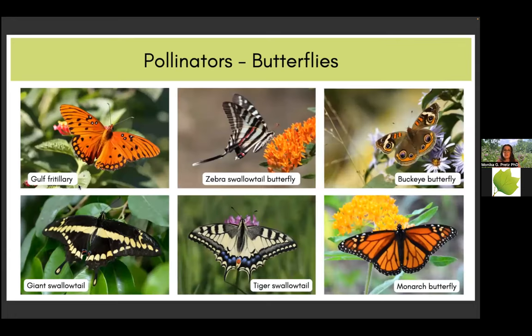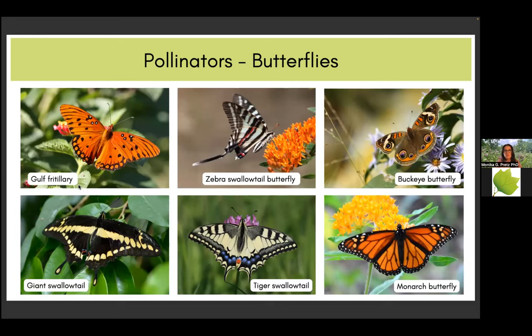The second large group of essential pollinators are butterflies. We have many astonishingly beautiful butterflies in Tennessee — the zebra swallowtail butterfly is our state butterfly. Moth species are also great pollinators. You can see the clearwing moth, hawk moth, and primrose moth — those are really good pollinators. Many of them are actually nocturnal and pollinate flowers that bloom in the evening or late afternoon, like the evening primrose.